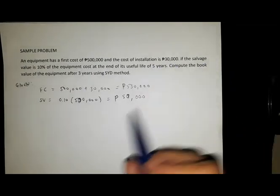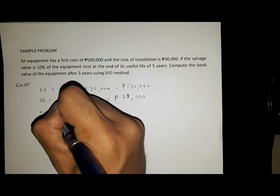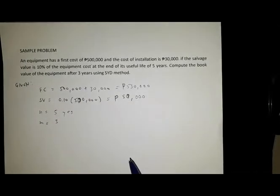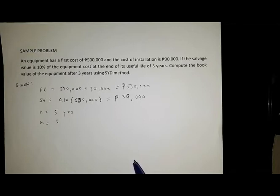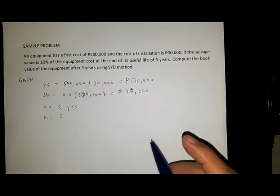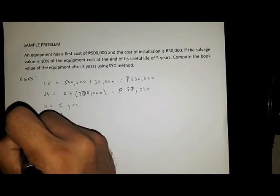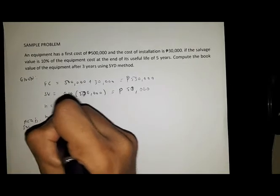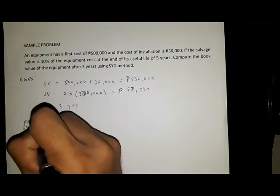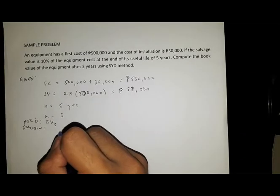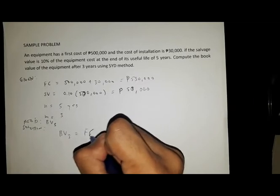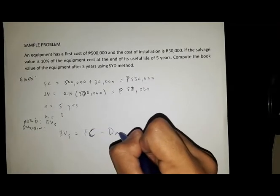So n equals 5 years and m equals 3. We need to compute the book value of the equipment after 3 years using the SYD method. The required value is Book Value after 3 years, which equals First Cost minus the total depreciation after 3 years.